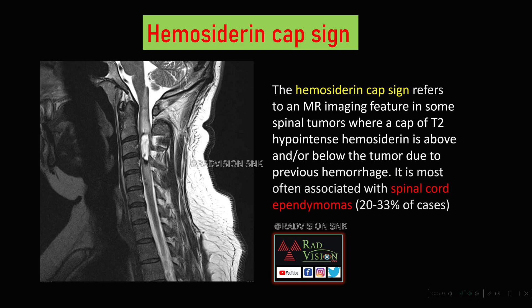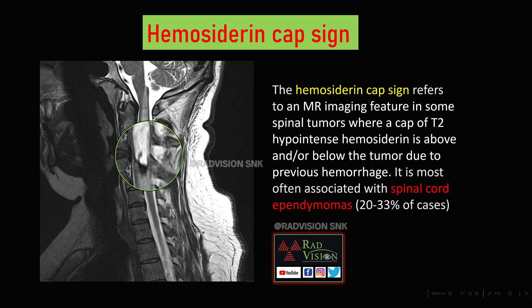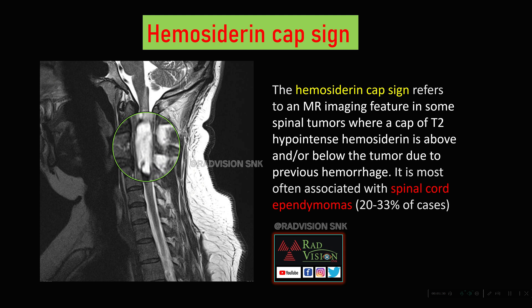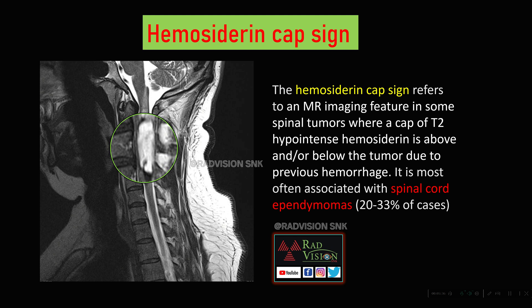Next is the Hemosiderin Cap Sign. On MR imaging, on the T2-weighted image, there is a hyperintense lesion in the spinal cord at C2-C3 vertebral level, with a hypointense rim or cap seen above and below the tumor. This hypointense cap is the hemosiderin rim or cap, due to chronic hemorrhage above and below the tumor from previous hemorrhage. It is classically seen in spinal cord ependymomas in 20 to 33 percent of cases. The Hemosiderin Cap Sign can also be seen in spinal cord cavernomas.